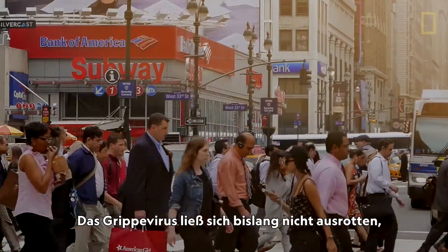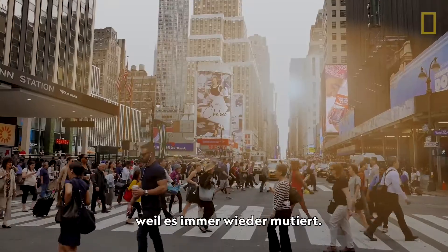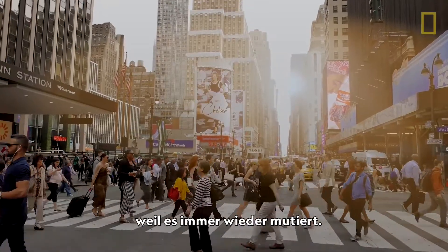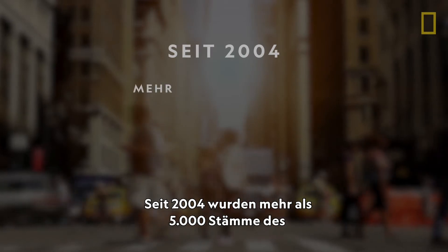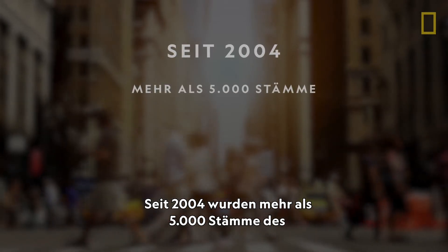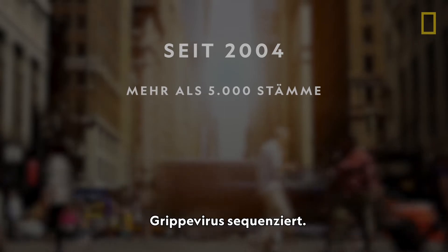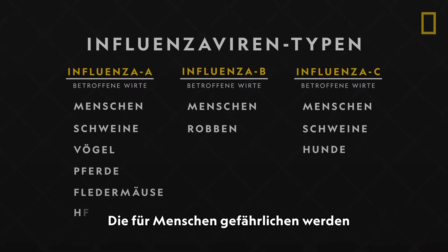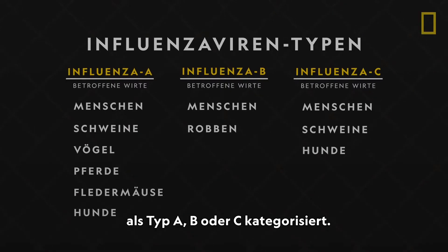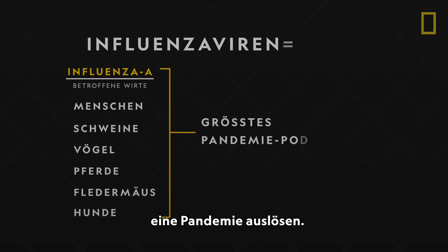The flu virus has been nearly impossible to eradicate, largely due to its uncanny ability to mutate. Since just 2004, more than 5,000 different strains of the influenza virus have been sequenced. Those that affect humans are categorized as types A, B, or C, with type A strains being the most capable of unleashing a pandemic.